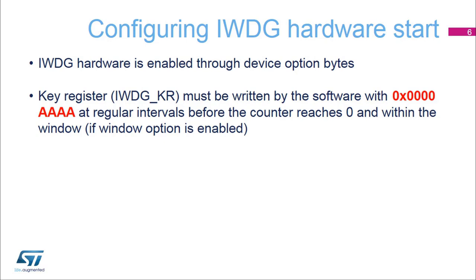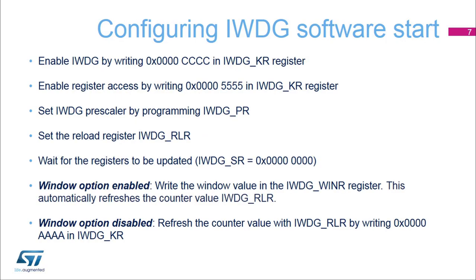The IWDG hardware is enabled by the device's option bytes. If enabled, the watchdog automatically starts at power on. To prevent any reset, the key register must be refreshed at regular intervals before the counter reaches 0, and within the window if that option has been selected.